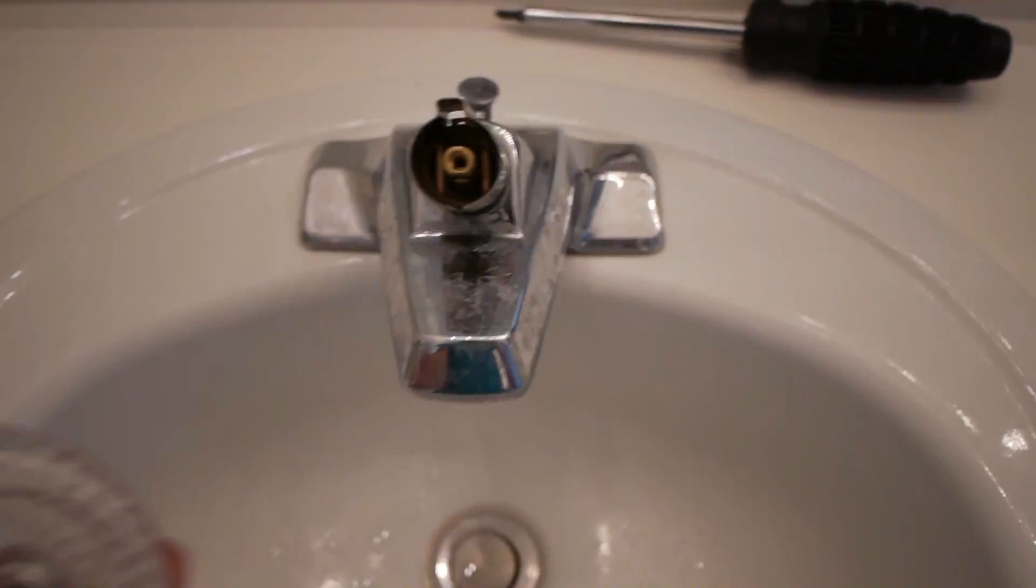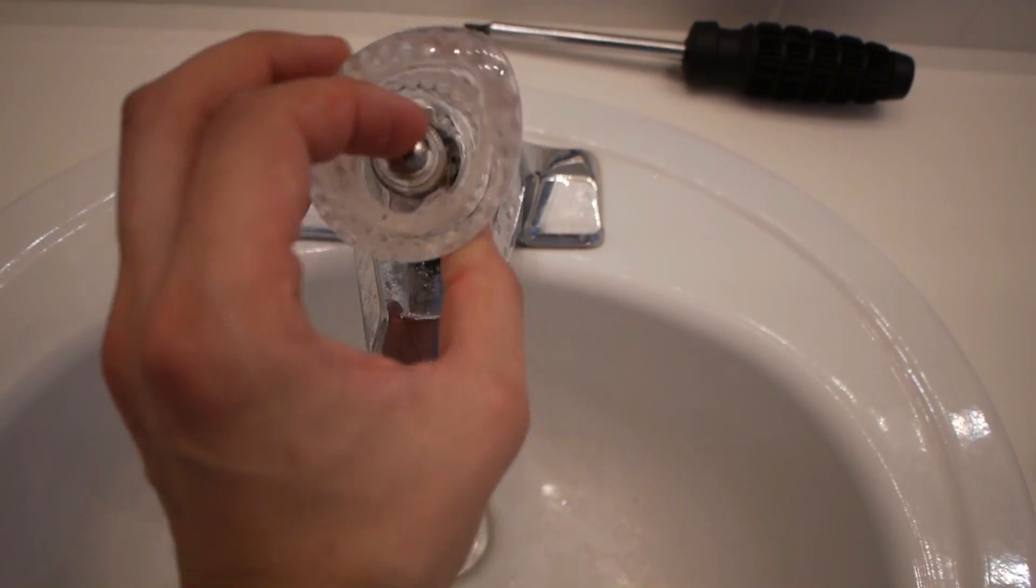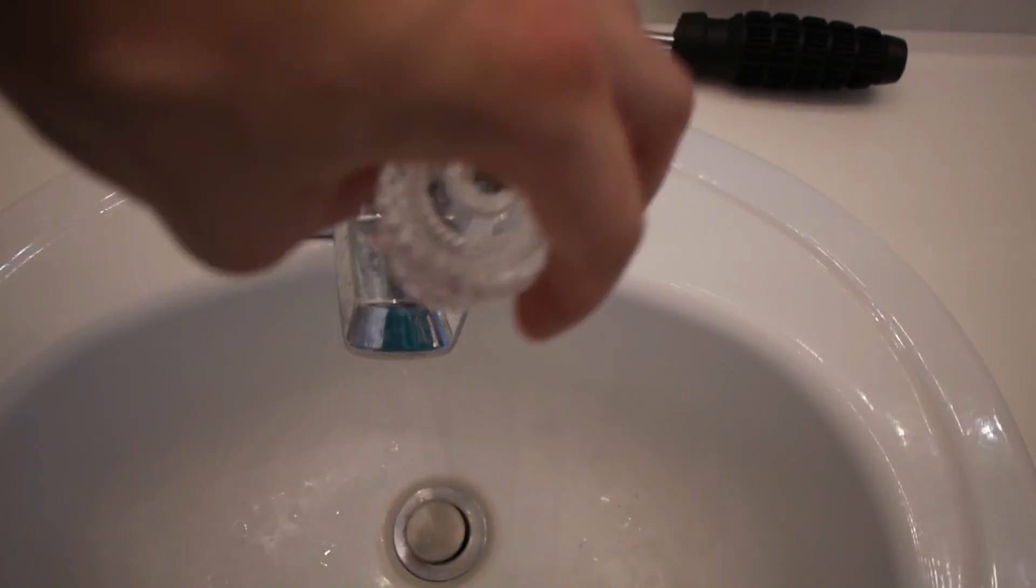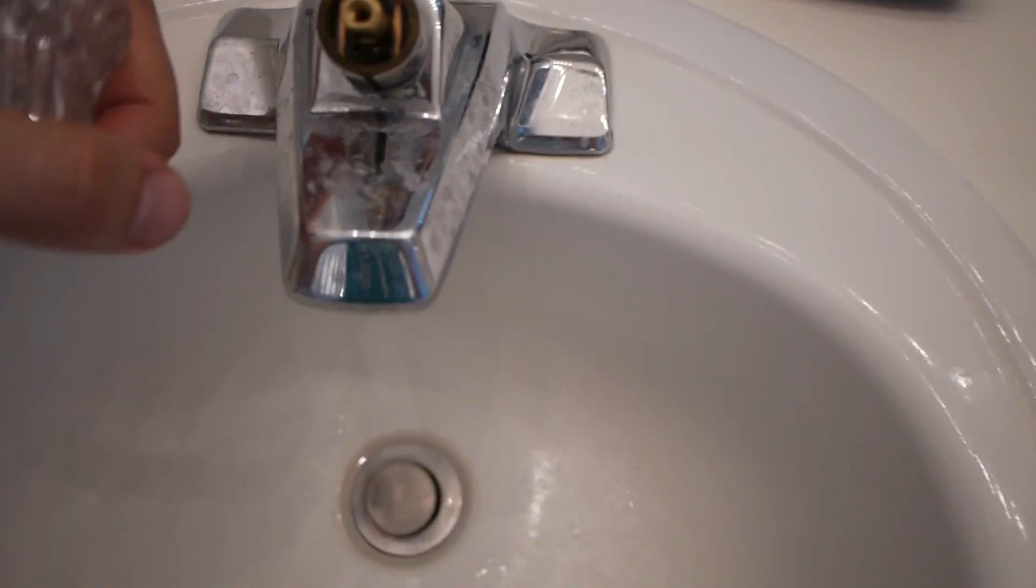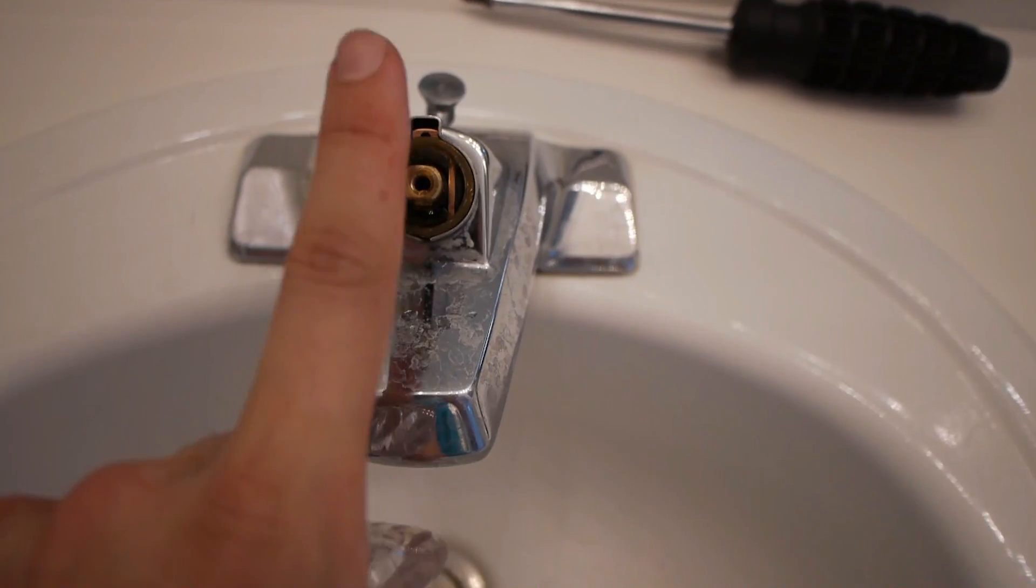Now this guy is the limiter. What it does is it allows you to turn the handle. Once we install it, you can see there are like two notches here. It allows you to turn the handle only a certain amount rather than spin it. This slides on just like that. This notch up top will line up with the notch in that retainer clip that we just installed.